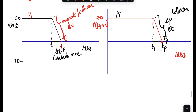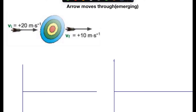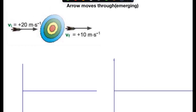Now let's look at another scenario: the arrow passes through the target. The initial velocity of the arrow is 20 m/s to the right (positive). As it emerges through the target, its velocity decreases. The velocity decreases from 20 to 10 m/s — so the final velocity is 10 m/s. Since there's a change in velocity, there is also a change in momentum.